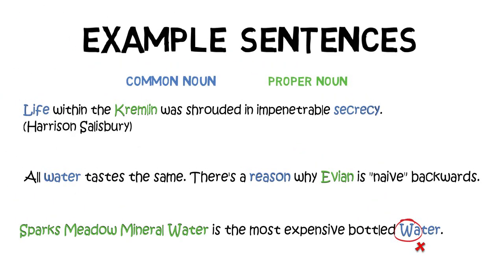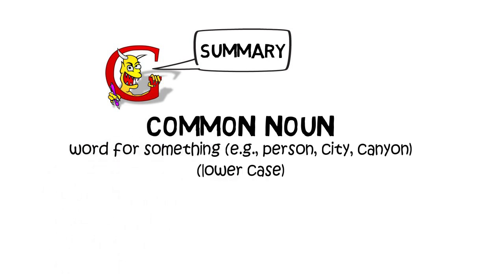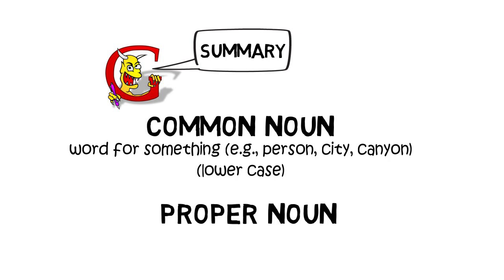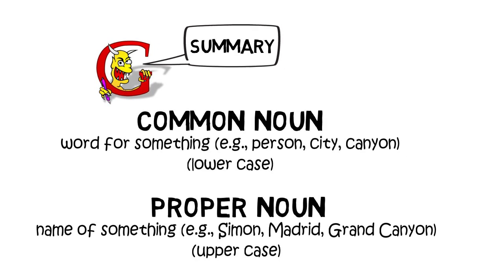And while we're at it, looking back at the first example, Harrison Salisbury is obviously his name, so that is a proper noun too. So let's summarise: common noun — it's the word for something, e.g. person, city, canyon — written in lowercase, unless it starts a sentence. And proper nouns — the name of something, so Simon, Madrid, Grand Canyon — these are written in uppercase.